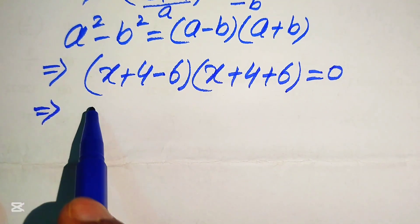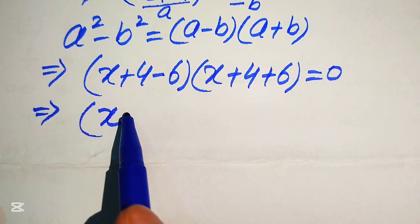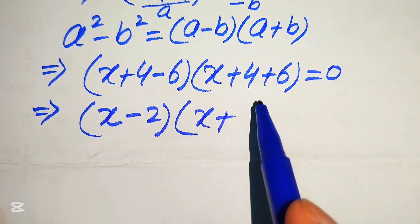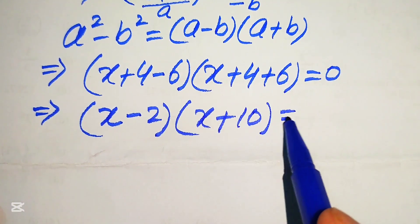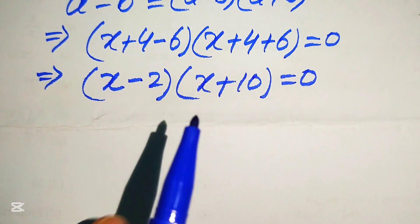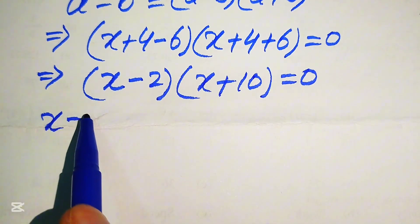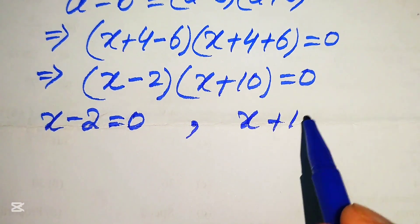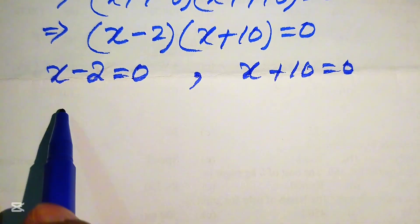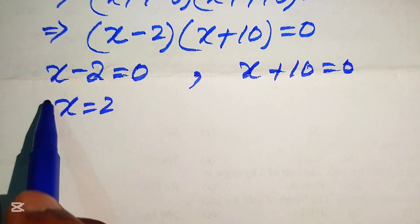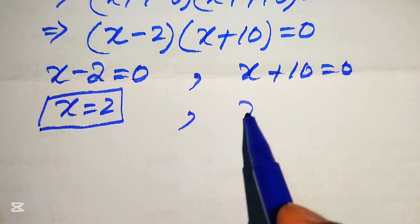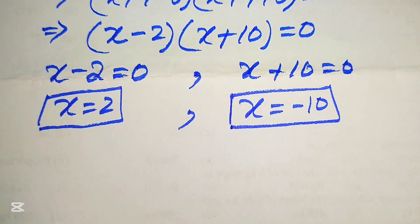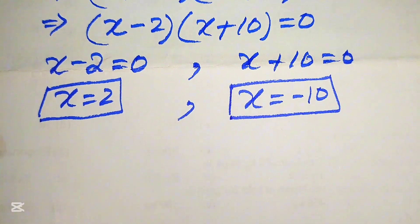Simplifying, (4 − 6) = −2 and (4 + 6) = 10, giving (x − 2)(x + 10) = 0. Breaking into two cases: x − 2 = 0 gives x = 2, and x + 10 = 0 gives x = −10. These are the same values obtained from Method 1.